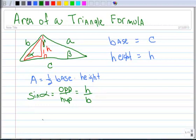So I've got the sine of alpha is H over B, and I'm going to multiply both sides by B. So I have H equals B times the sine of alpha.